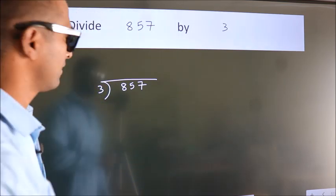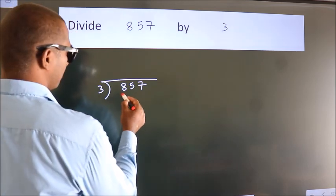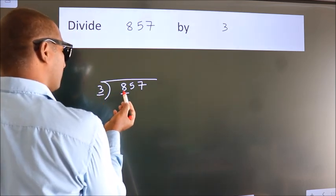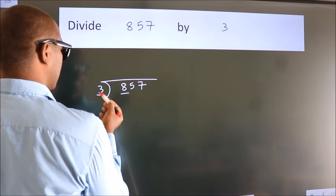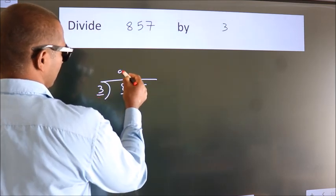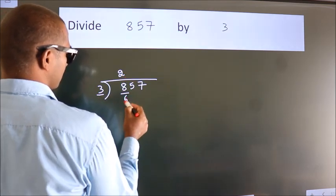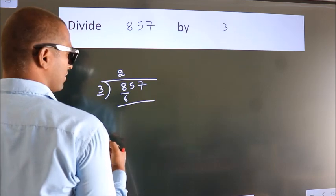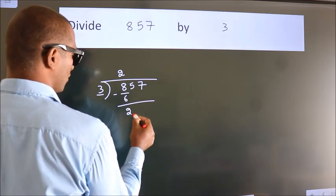Next, here we have 8, here 3. A number close to 8 in 3 table is 3 2s, 6. Now we should subtract. We get 2.